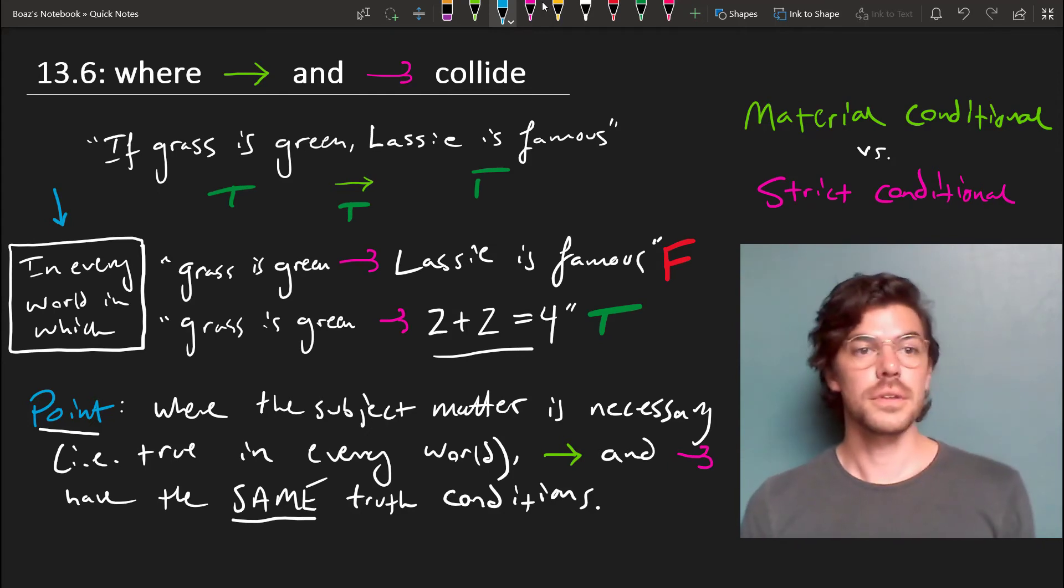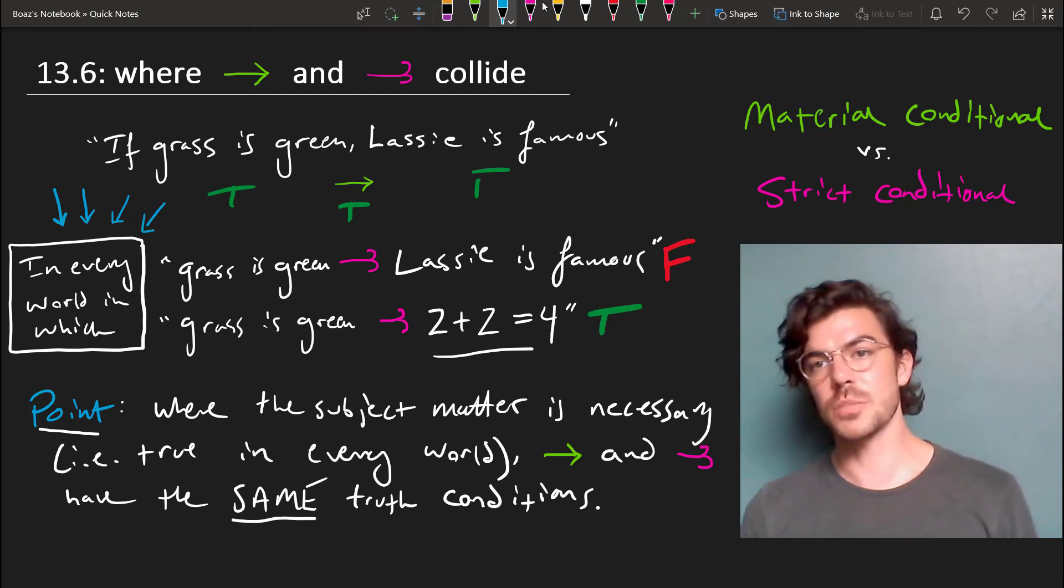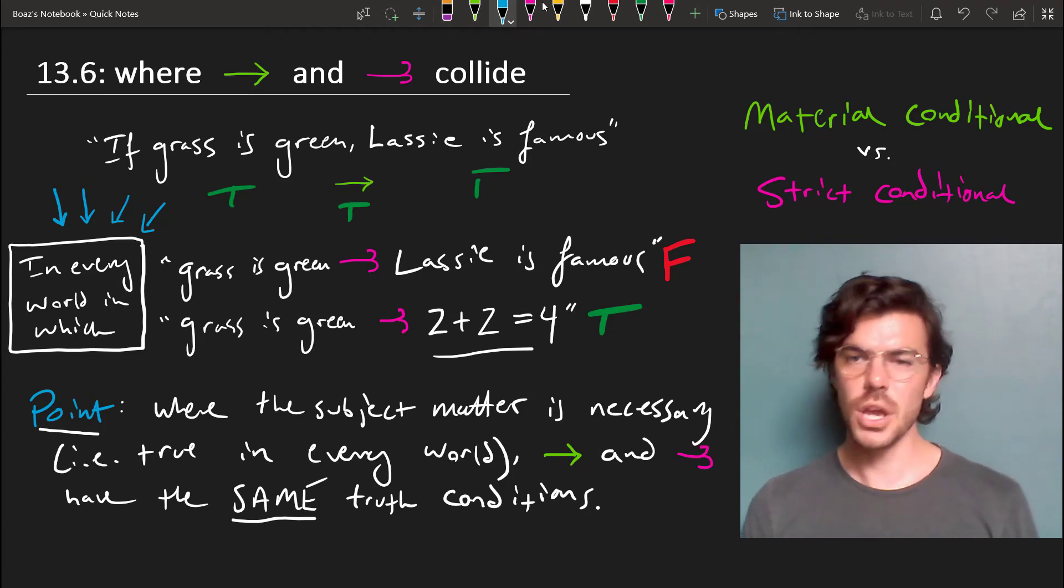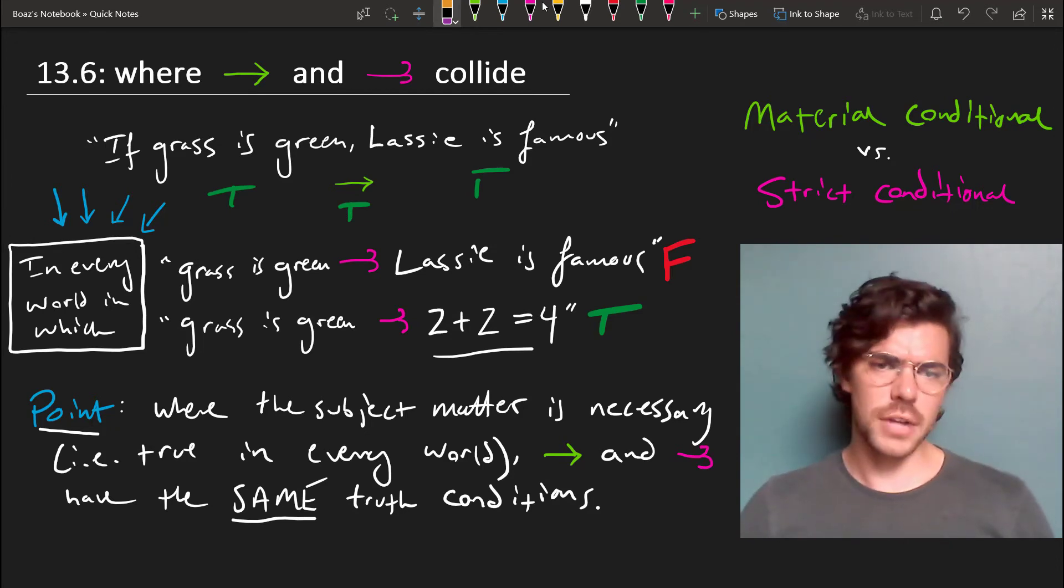So this whole modal operator right here is, in a way, superfluous and can be done away with. And I think that explains a good deal of why the material conditional, although it seems so strange for natural language, works so well for math, which is because the math itself provides some support to it, given the nature of mathematical truths.